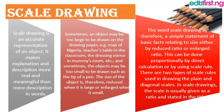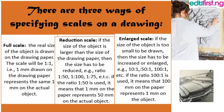Scale drawing is therefore simply a statement of basic facts relating to size, either by reducing ratio or enlarging ratio. This can be done by direct calculation or by using a scale rule. There are two types of scale rule used in drawing: the plane scale and the diagonal scale. The scale is usually given as a ratio and stated in the title block.